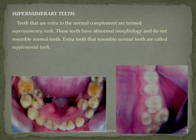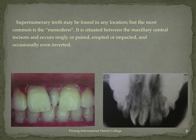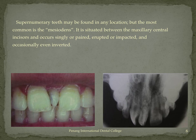Moving on to extra teeth — that is, supernumerary teeth, which normally will be of abnormal morphology. However, if that extra tooth resembles the normal teeth, it is termed a supplemental tooth. These supernumerary teeth can be present in different locations and are classified differently. Orthodontically, what we most commonly encounter is an extra tooth in the midline, termed a mesiodens, which can present singly, paired, erupted, impacted, or occasionally even inverted.